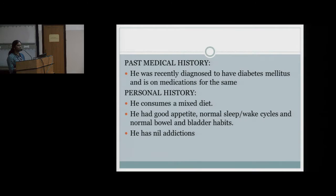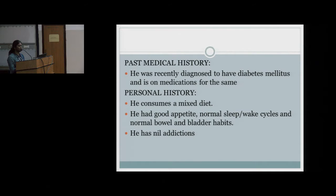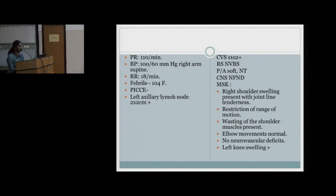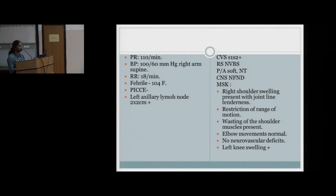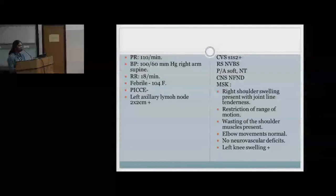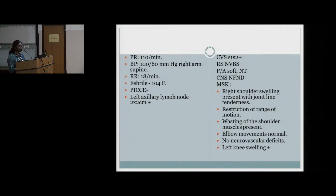He was recently found to have diabetes and is on medications from a local outside hospital. He consumes a mixed diet and does not have any addictions like smoking or alcohol. At arrival, vitals showed pulse rate of 110 beats per minute, BP of 160/60, respiratory rate of 18 per minute, and he was febrile with a temperature of 104 degrees Fahrenheit.